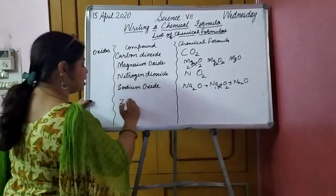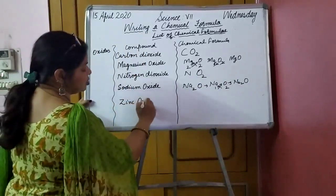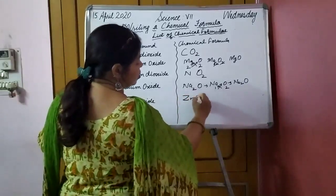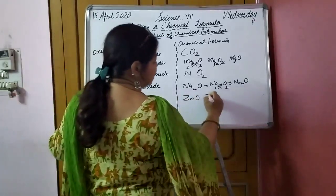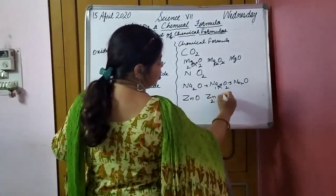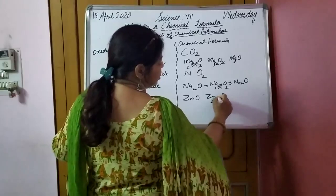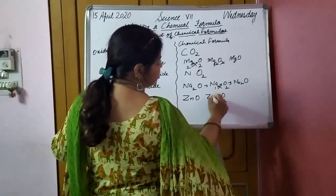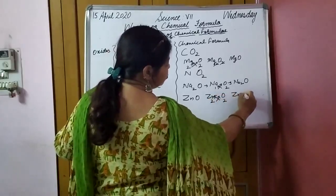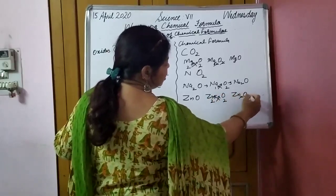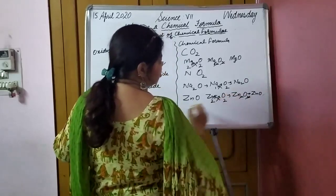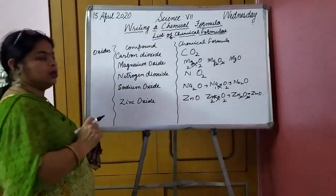One more — zinc oxide. Zinc is Zn. The valency of Zn is 2, and the valency of oxygen is also 2. Criss-cross the valencies and it becomes Zn2O2. That will be cut — they have a common factor of 2 — and it becomes ZnO.